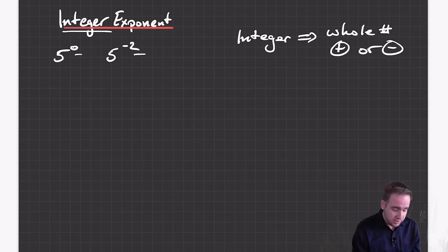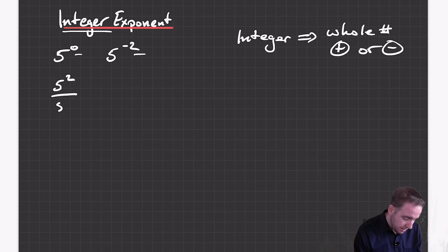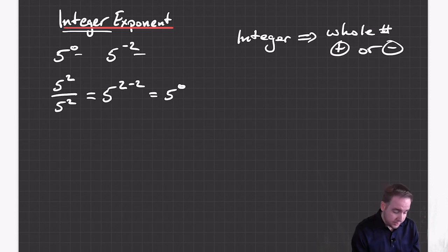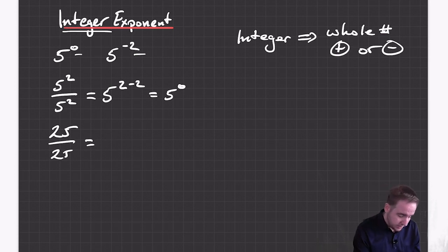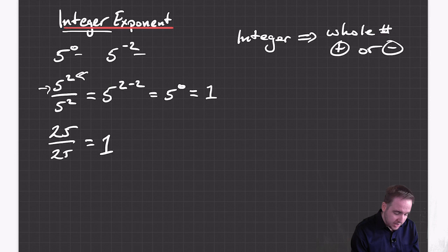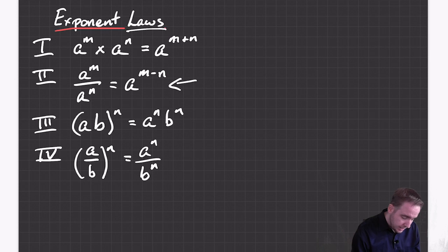The way you get five to the zero is you take something you do know — say five to the power of two divided by five to the power of two. According to the rule, that should be five to the power of two minus two, which should be five to the zero. But you can also just do the math: this is 25 divided by 25, and 25 divided by 25 is one. So this answer needs to be one. If I have the same number on the top and the same number on the bottom, when I divide through, the answer is going to be one.